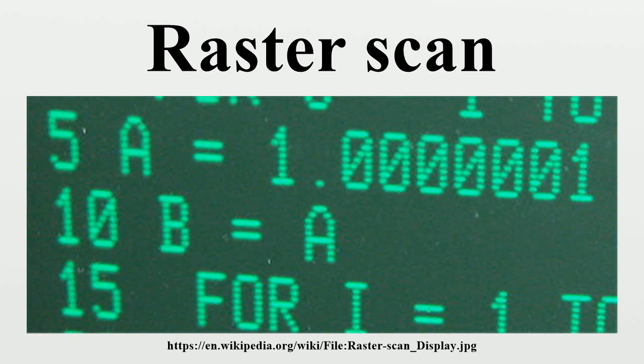An image is subdivided into a sequence of strips known as scan lines. Each scan line can be transmitted in the form of an analog signal as it is read from the video source, as in television systems, or can be further divided into discrete pixels for processing in a computer system. This ordering of pixels by rows is known as raster order, or raster scan order. Analog television has discrete scan lines, but does not have discrete pixels — it instead varies the signal continuously over the scan line.